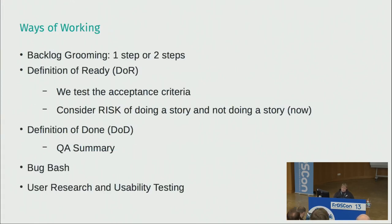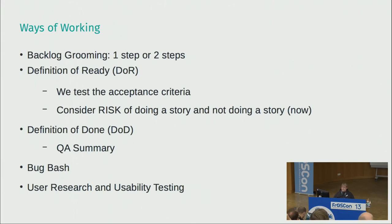For our ways of working, we found that backlog grooming is really important — prepare a story before it goes into a planning meeting. It's best to do grooming in a two-step setting: first, designers with maybe one QA, one developer, and the PO prepare the stories and do all their discussions. Then once it's pretty ready, you go into a second session where you really define all the acceptance criteria so the story is ready when you go into planning. Once the story is done, you have a definition of done, which I'll show on further slides.